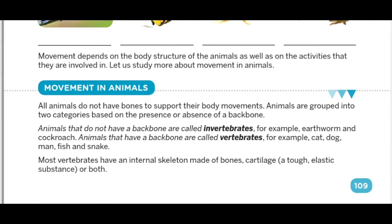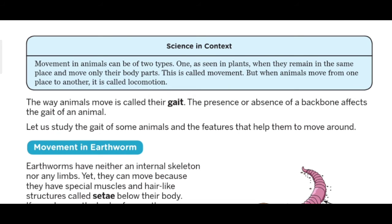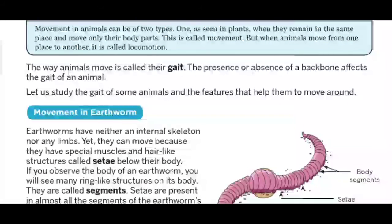Animals that do not have a backbone are called invertebrates — for example, earthworm and cockroach; इनके अंदर backbone नहीं होती है। और जिनके अंदर backbone होती है उन्हें हम vertebrates कहते हैं। The way an animal moves is called its gait, and the presence or absence of a backbone affects the gait of the animal.